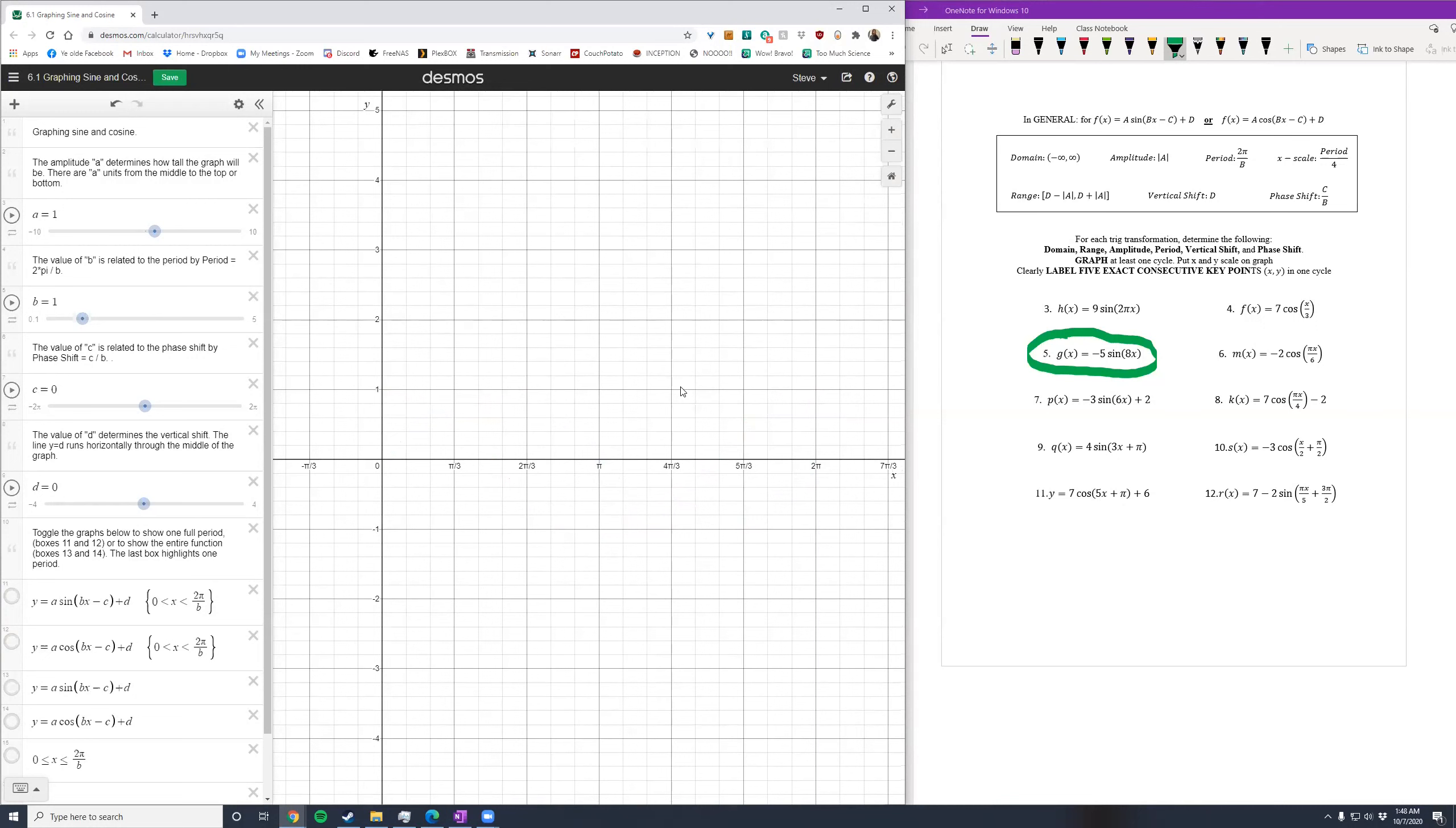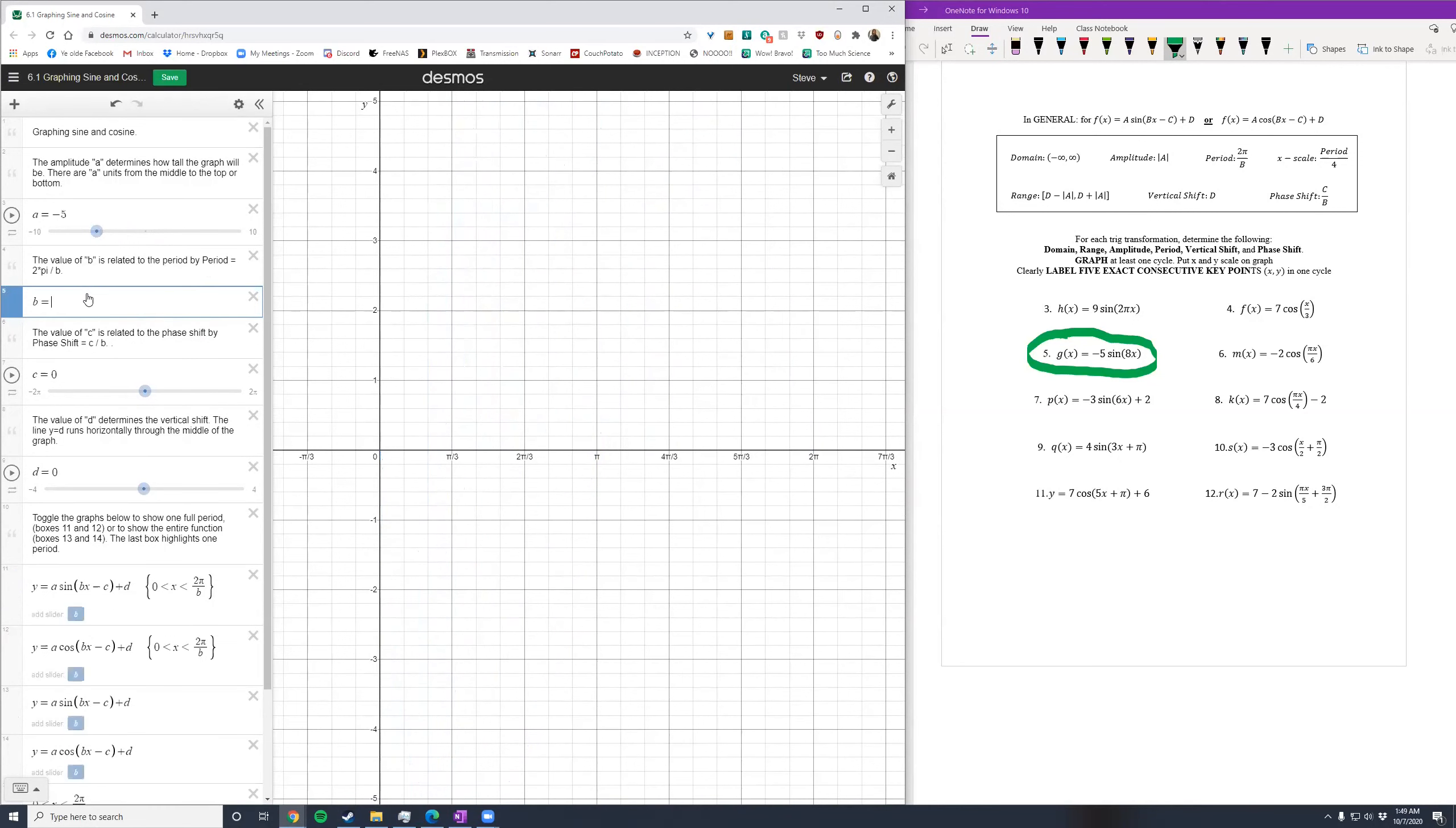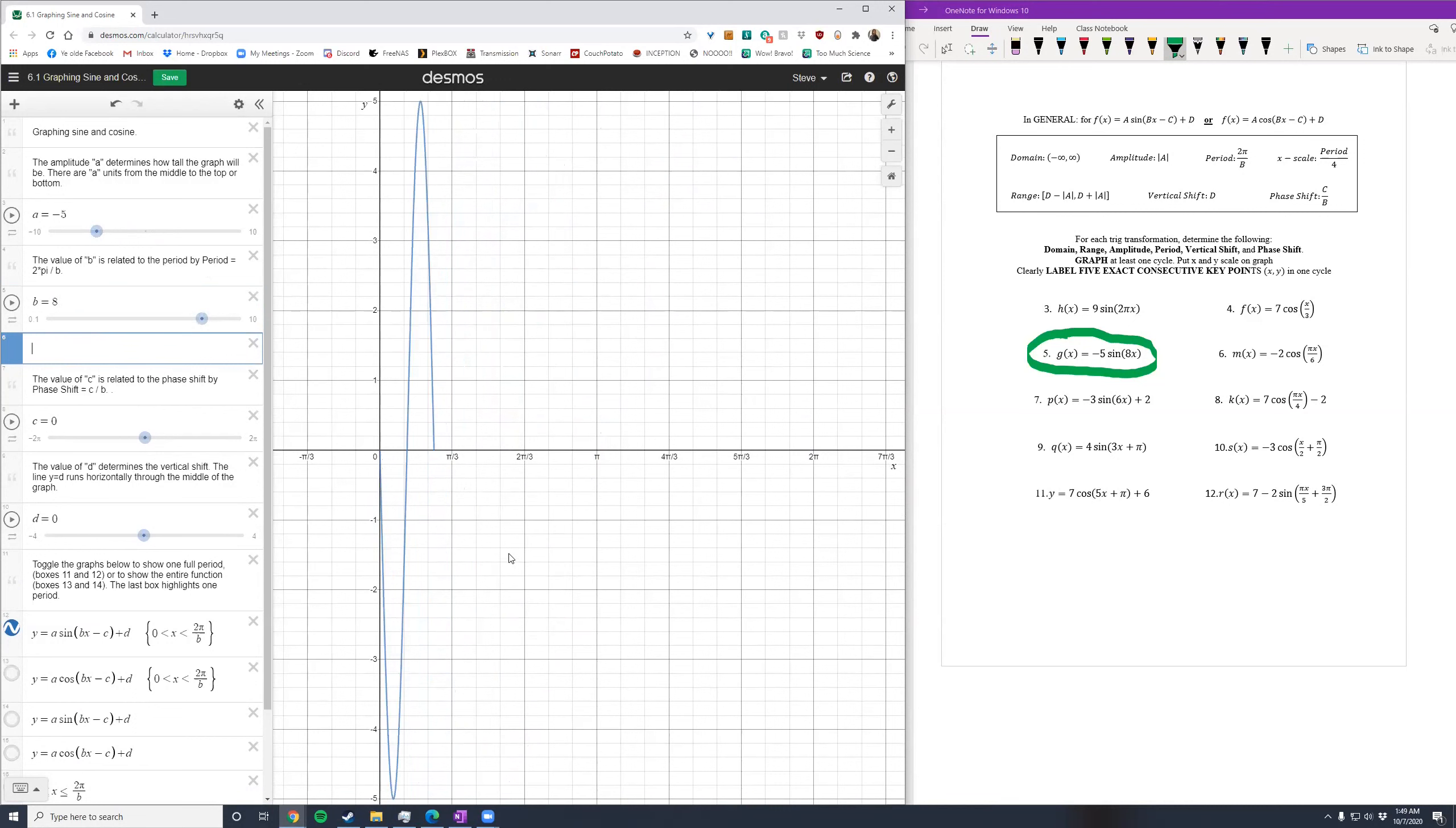Problem five, I've got negative five sine of eight x. So turn on the sine graph, adjust a down to negative five. So notice that this graph reflects over the x axis. And then increase b up to eight. In fact, the slider won't go all the way there. Change it to eight.